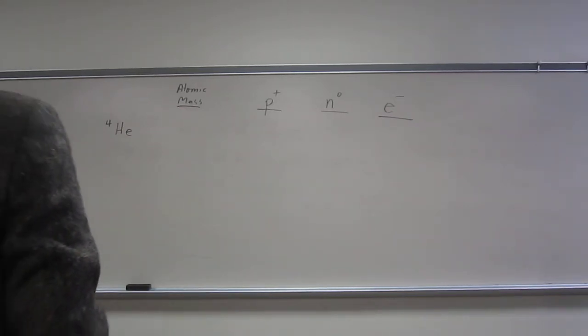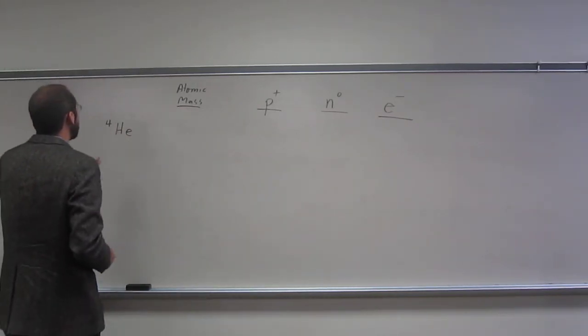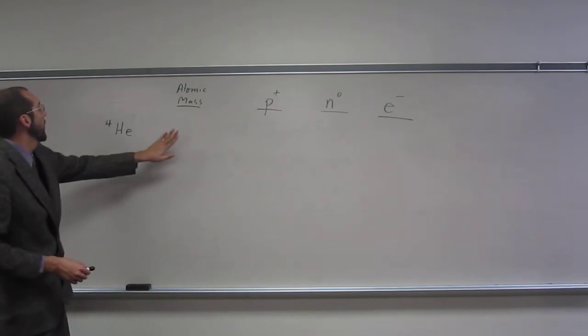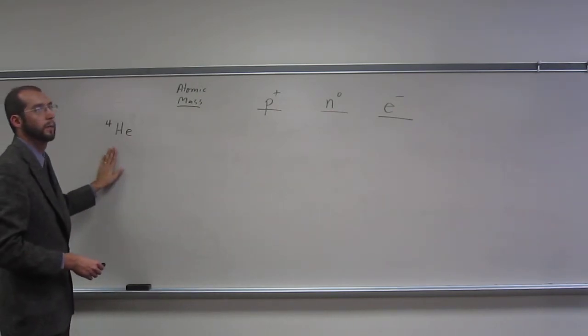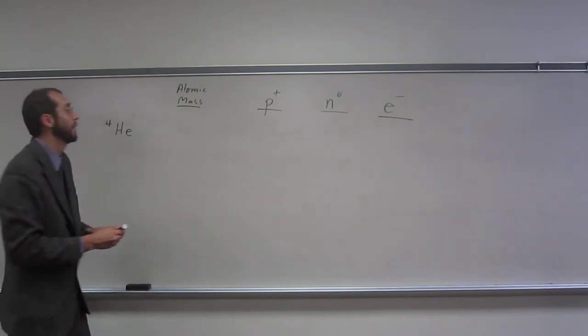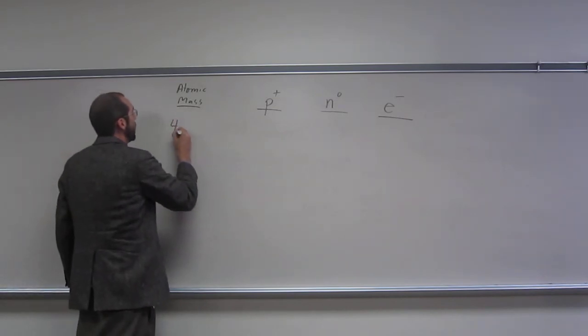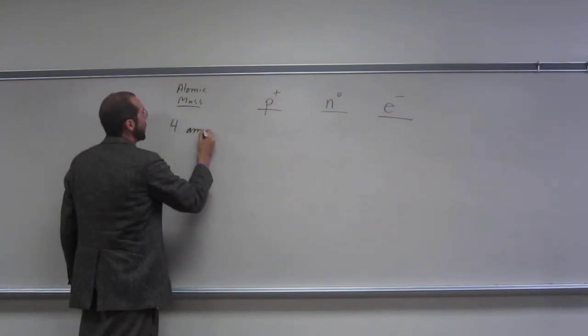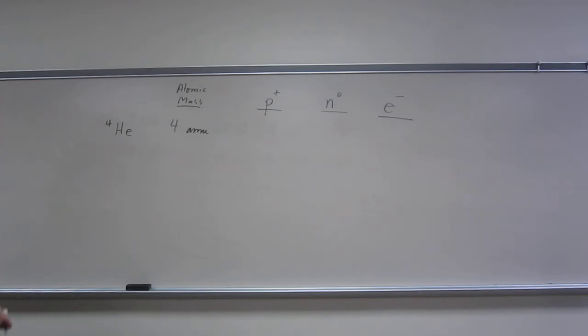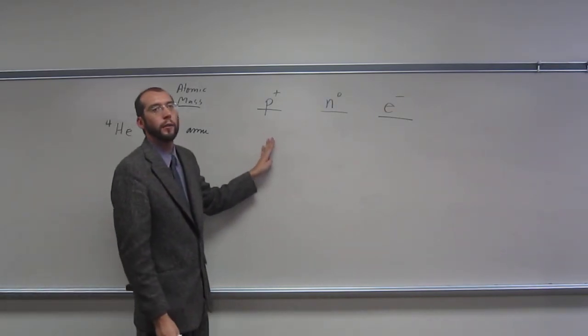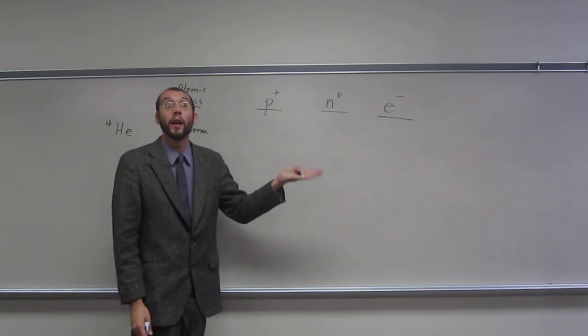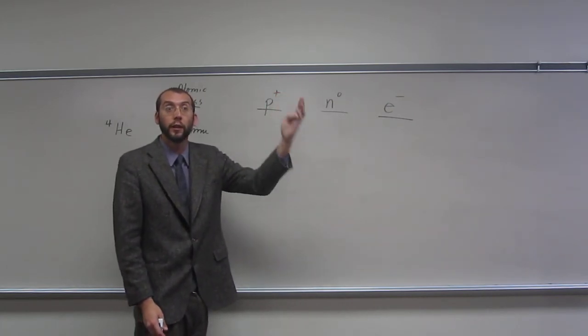Okay, so imagine this to be a neutral atom. What would be the atomic mass of this atom? 4. Helium-4 is going to have an atomic mass of 4 AMU, right, or 4. The number of protons in this would be what? It would be 2. And how did you figure that out? You looked at the periodic table, right?